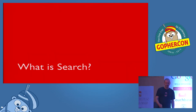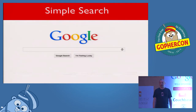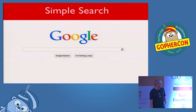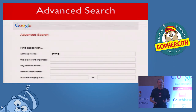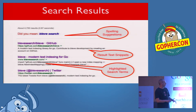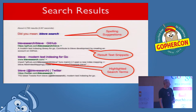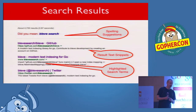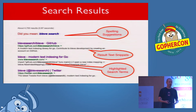So before we go too far — what is search? Obviously, this is what most people think of: a box, you type in what you're looking for and you get good results. Sometimes it also means an advanced search — maybe you're searching for phrases, restricting the search to different fields, or adding date range or numerical range searches combined with full-text search. And when we look at results, spelling suggestions are very common. Here I searched for BleveSearch all one word, and Google's suggesting maybe I should do it as two separate words.